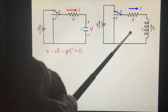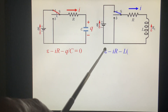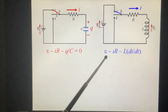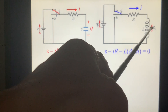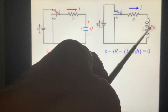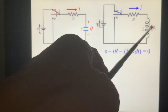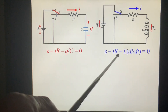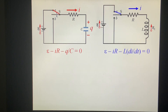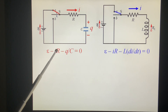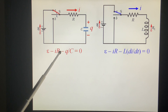And we look at this one: epsilon minus IR. This one — you see the self-induced electromotive force — this is positive, so we have minus L dI/dt. And I is dQ/dt. So we rewrite this equation.